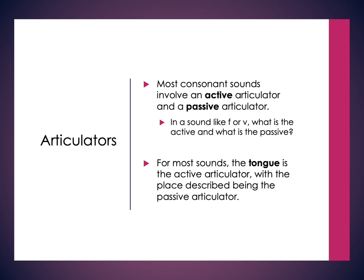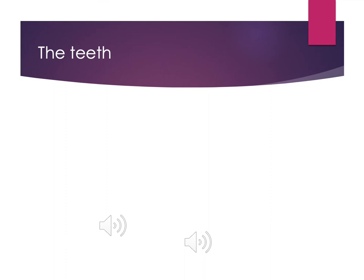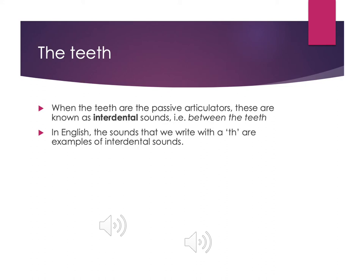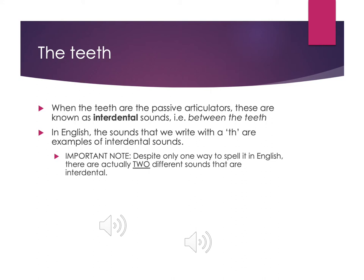Moving further back, where the tongue is the active articulator, we get to the teeth as our next place. When both sets of teeth are the passive articulators, these are known as interdental sounds — inter meaning between, dental meaning teeth. The air comes out through the space between your teeth. In English we do have interdental sounds, typically spelled with TH. But it's important to note that spelling in English is not going to be helpful for thinking about our sound system.